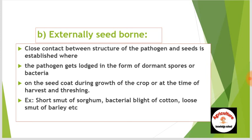In the externally seed-borne process, the mycelium or other infected part is present on the seed coat, not in the embryo. Examples of externally seed-borne diseases include sword smut of sorghum, bacterial blight of cotton, and loose smut of barley.